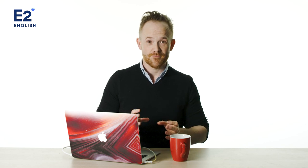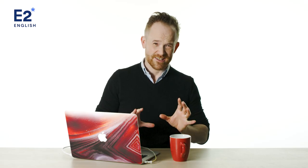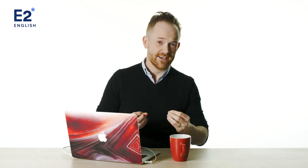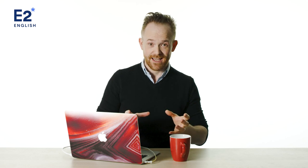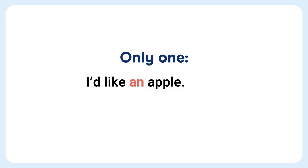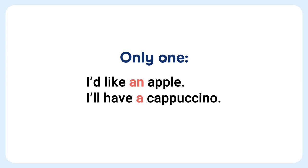Now let's look at some situations where we use the indefinite article, starting with 'only one.' This one's pretty easy. Sometimes we use 'a' or 'an' instead of the word 'one,' like in: 'I'd like an apple,' 'I'll have a cappuccino,' or 'I bought a book.'